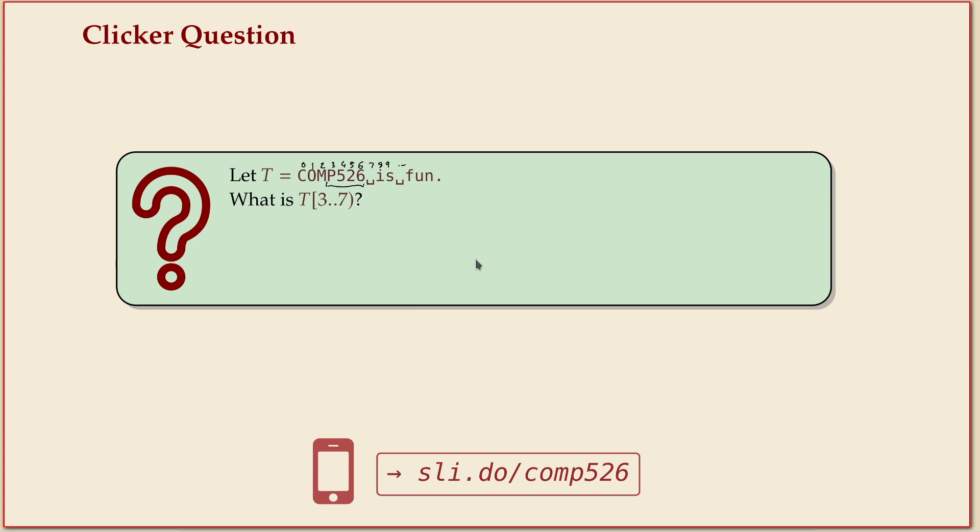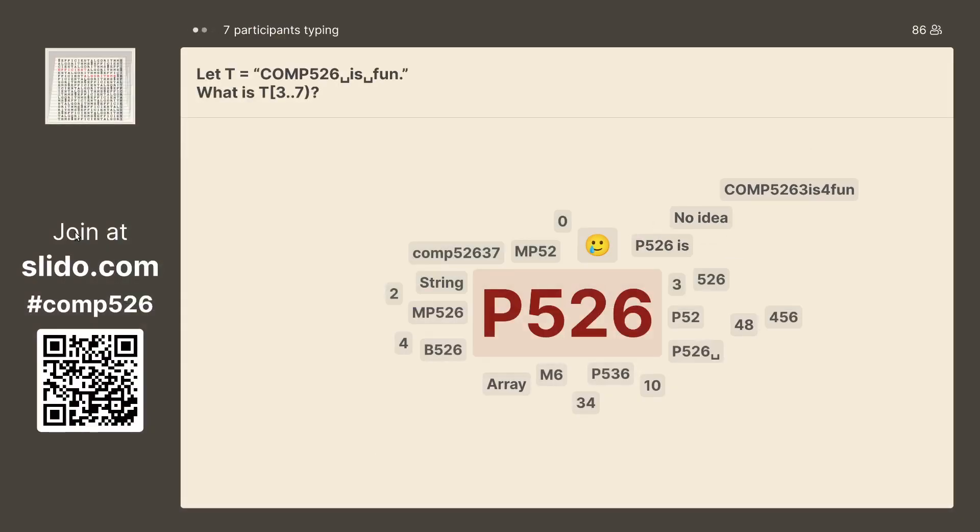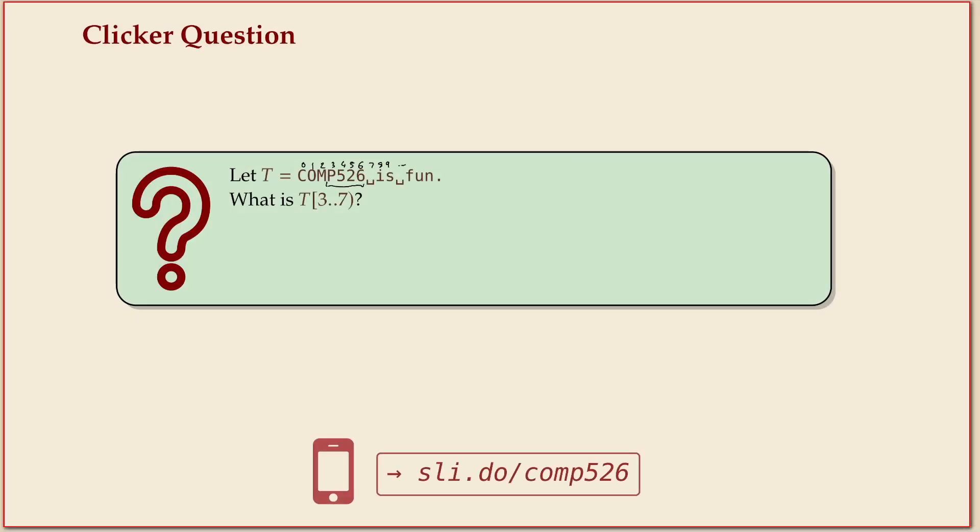Okay, we have a clear majority. It's P526, and that's correct. So I tried to show you, but it's very tiny. All you really have to do is put the numbers, the indices, on top of the letters. Then you start reading at index 3 with the P, and you stop just before 7. And here's that in nicer format.